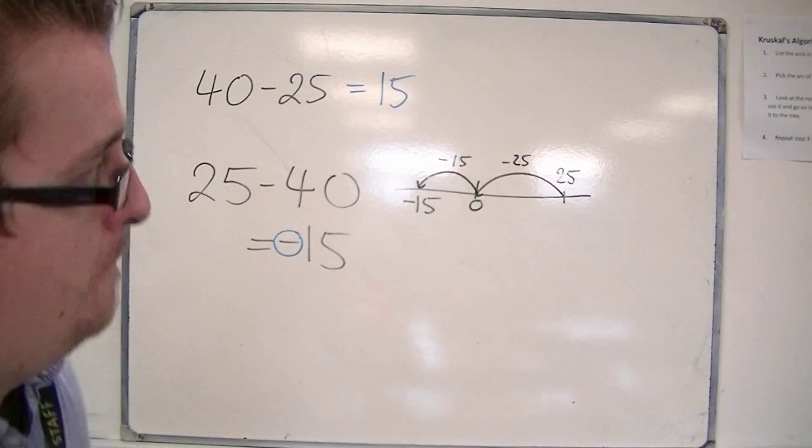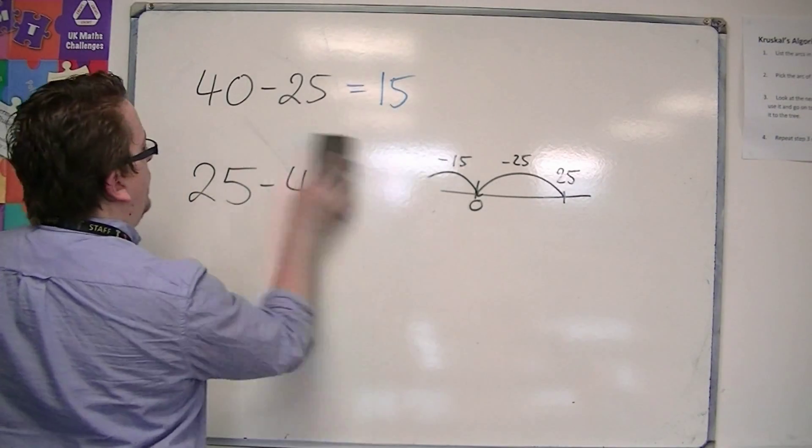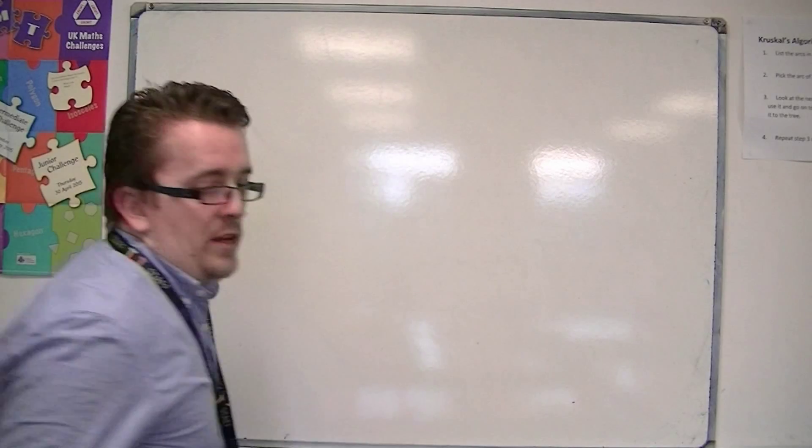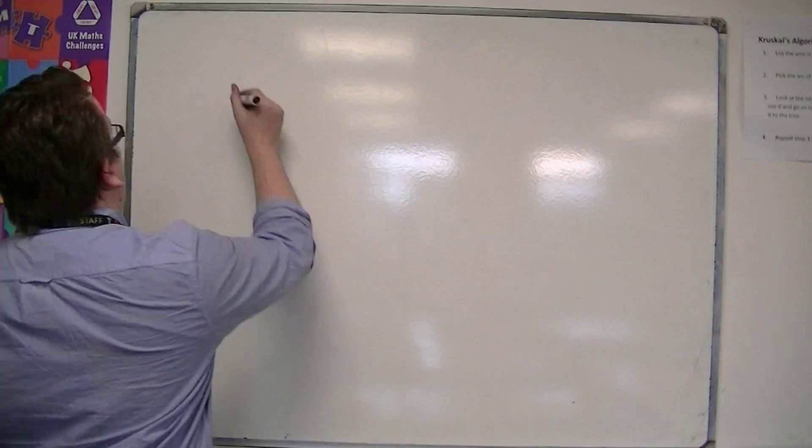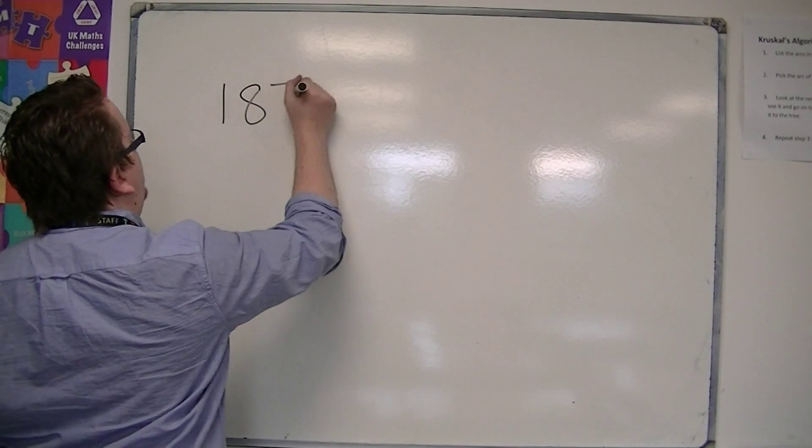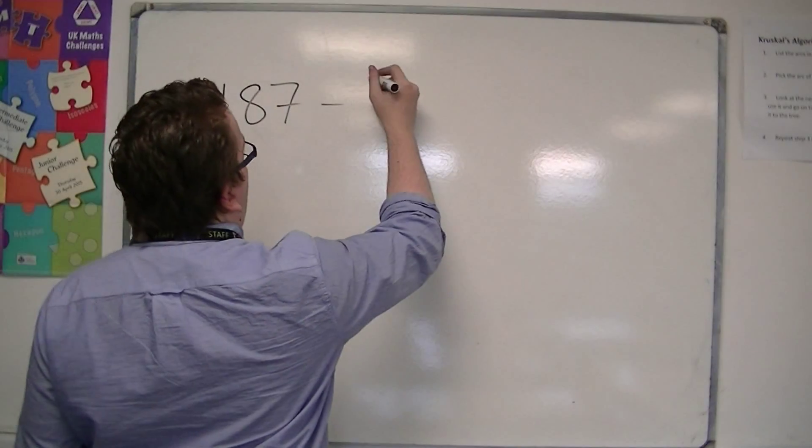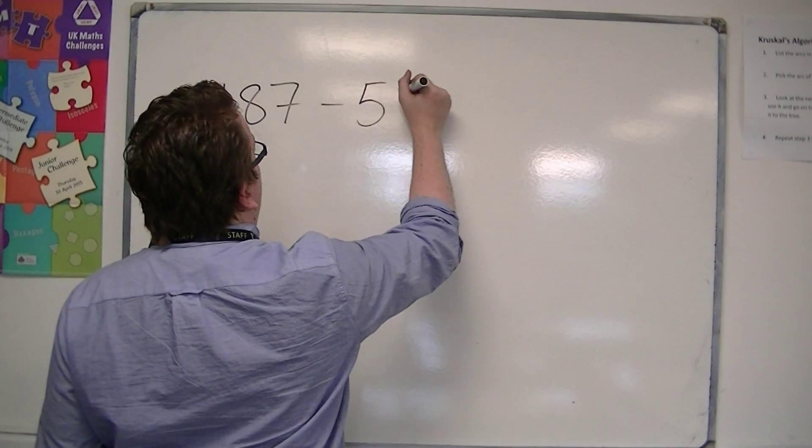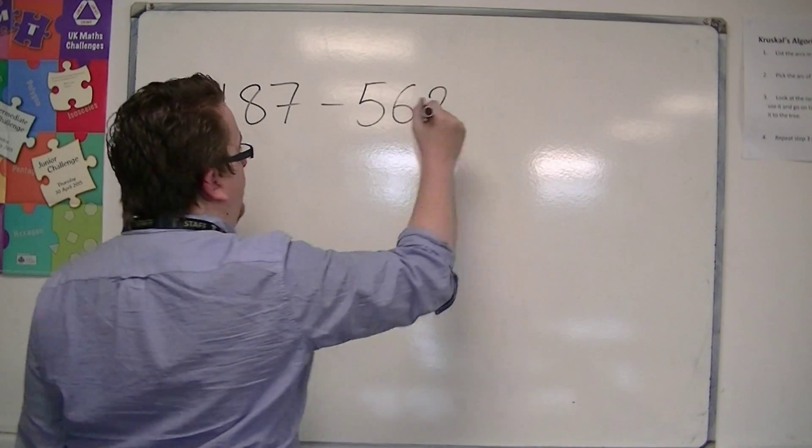Let's look at another one. Let's say we have something more complicated, like 187 take away 562.